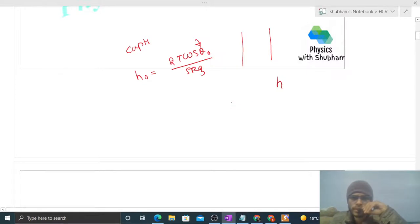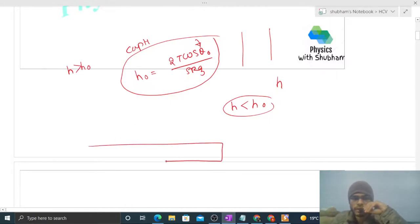What will happen if this small h is less than h naught? This equation is valid when h, the height of the capillary tube, is greater than the height of the liquid in the capillary tube. Let me draw the diagram. We have this liquid and this is the capillary, and the height of the capillary is h, and the height of the liquid in the capillary is h naught.